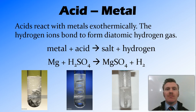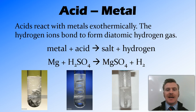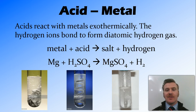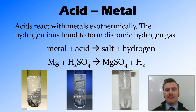An example of this would be the reaction of magnesium with sulfuric acid. So magnesium is the metal, sulfuric acid is the acid. They react to form magnesium sulfate and hydrogen. So the hydrogen comes from the hydrogen ions, and the sulfate ions bond with that magnesium to form the magnesium sulfate.